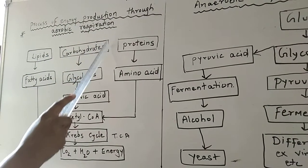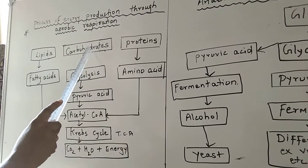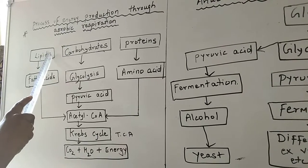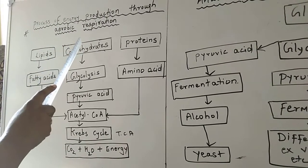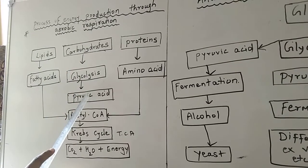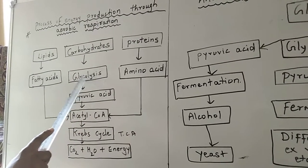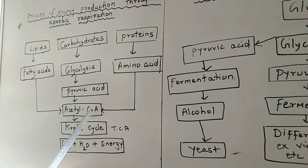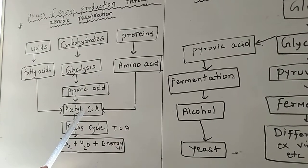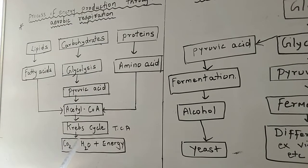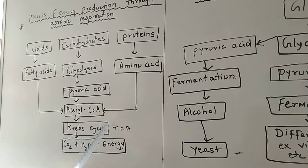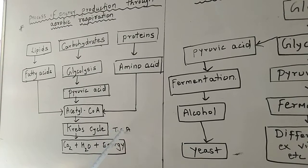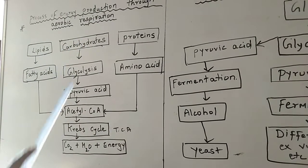Now in our diet we intake carbohydrates. In my earlier video we had taken information that carbohydrates and lipids are called as energy giving nutrients. Now carbohydrates are converted to pyruvic acid by a process called glycolysis. And from pyruvic acid it gets converted to acetyl coenzyme. This acetyl coenzyme will produce carbon dioxide, water and energy with the help of Krebs cycle. Krebs cycle is also known as the tricarboxylic acid cycle. So in this way carbohydrates are converted to energy.